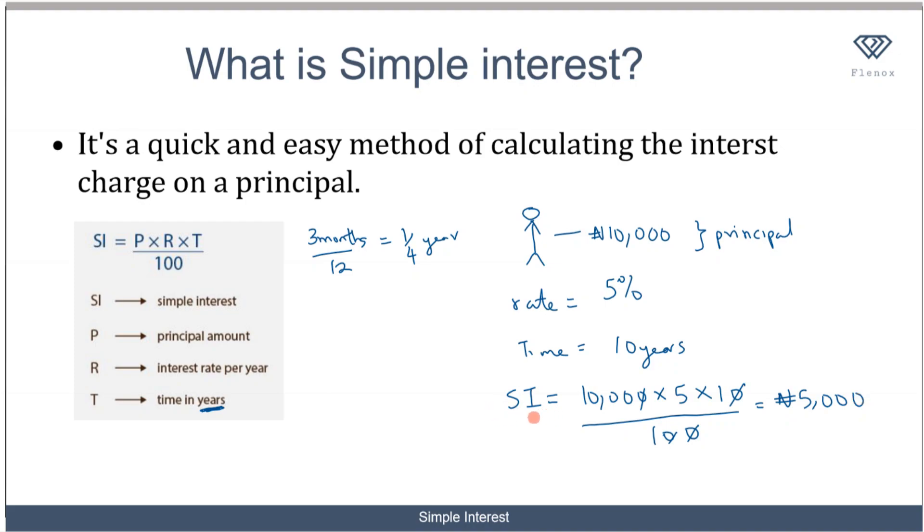That means at the end of 10 years you would have gotten an interest of 5,000 naira. But you might be asked to calculate the total amount of money you will get at the end of 10 years if you plan to cash out. The total amount is given by the principal that you originally invested plus the interest that you have gained. If I decide to cash out at the end of 10 years, the total money I will obtain will be 10,000 plus 5,000, which equals 15,000.